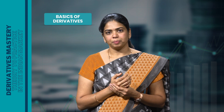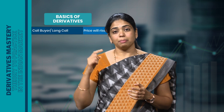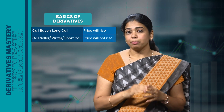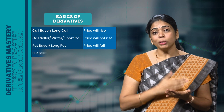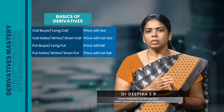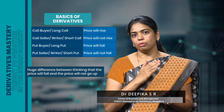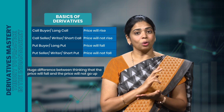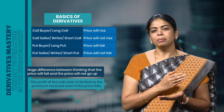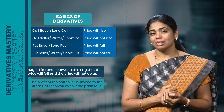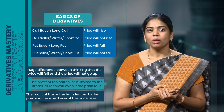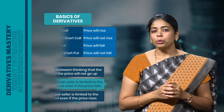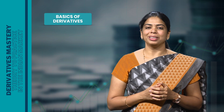Here are a few key points to remember: a call buyer always expects the price to rise — he is bullish. A call seller expects the price not to rise. A put buyer expects the price to fall — he is bearish — whereas a put seller expects the price not to fall. Note that there is a huge difference between thinking the price will fall and the price will not go up — both are not the same. The profit of the call seller is limited to the premium received even if the price falls. Similarly, the profit of the put seller is limited to the premium received even if the price rises. That's all for this video — I hope you now have a solid grasp of the fundamentals of derivatives. Thank you for watching.